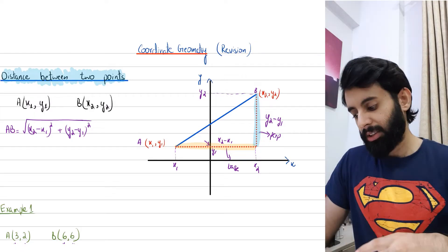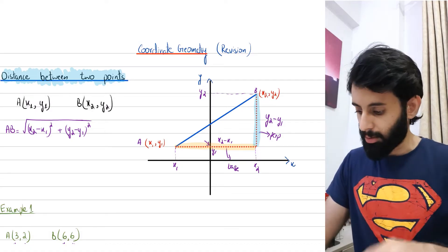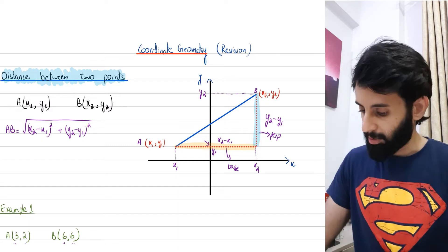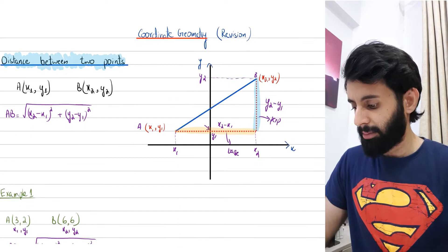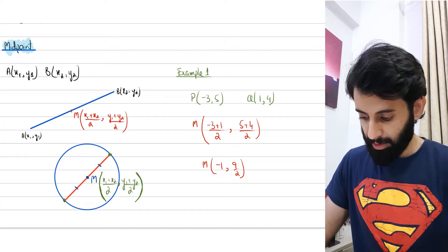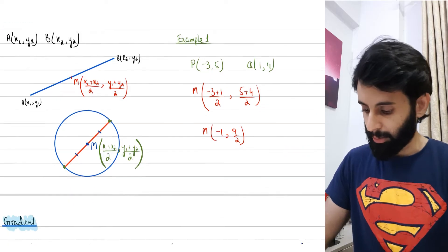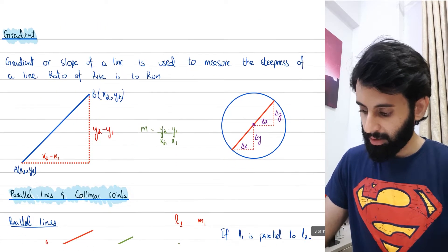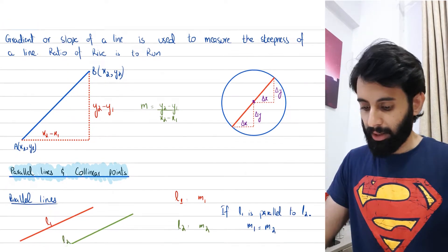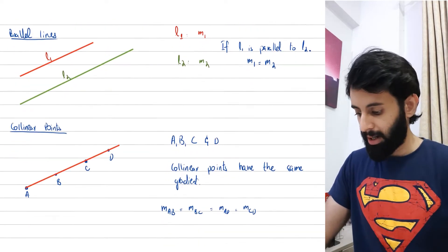Some concepts that we have done in O-levels also. I'm just going to quickly go over them, and the screenshots of these notes I will post on my Instagram — I'll leave a link in the description box. The first concept is distance between two points. Very important — you guys should know that from O-levels. And then midpoint, also very important, because we'll see how we can connect this concept when we're doing equation of circles.